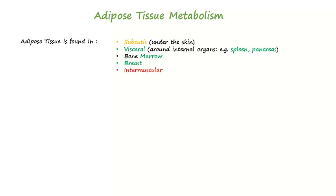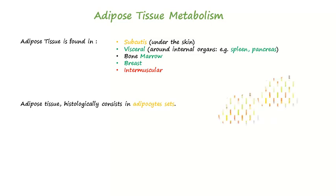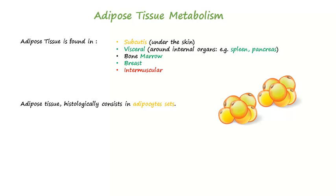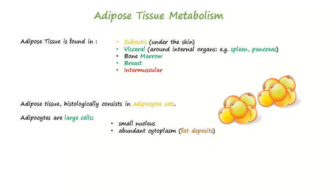Histologically, the adipose tissue consists of adipocyte sets — notice the picture. Adipocytes are large cells. They have a small nucleus but an abundant cytoplasm, where the fatty deposit is provided.